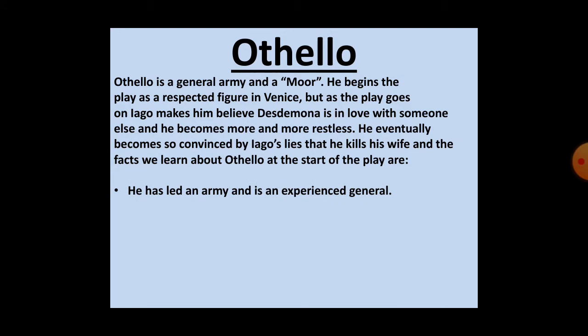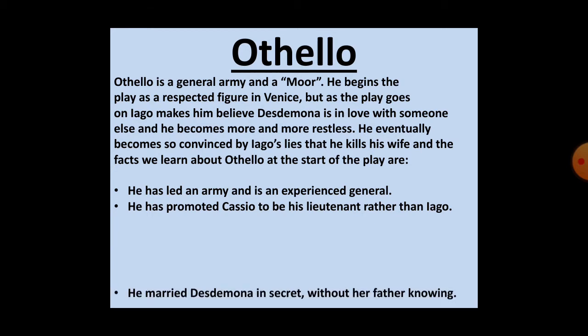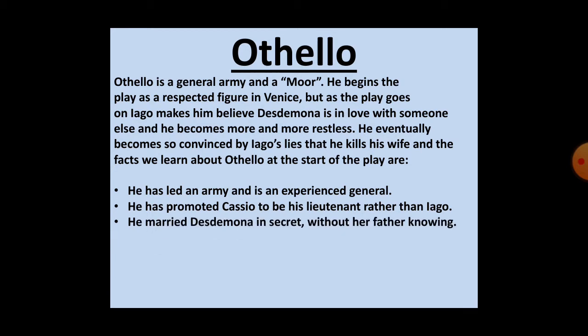The facts we learn about Othello at the start of the play are: he has led an army and is an experienced general; he has promoted Cassio to be his lieutenant rather than Iago; he married Desdemona in secret without her father knowing; and he is a Moor and is treated as an outsider by many other characters.